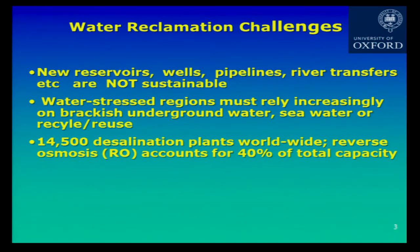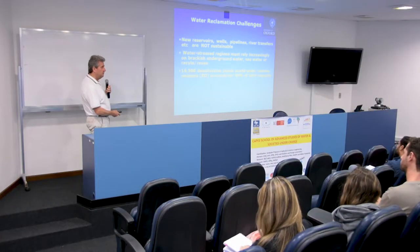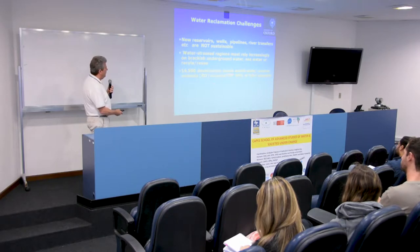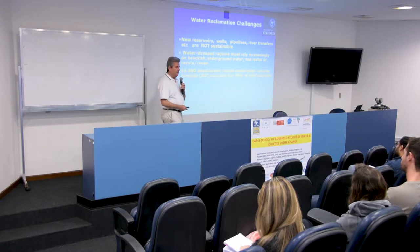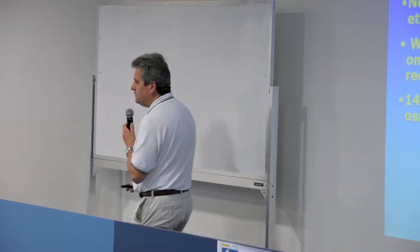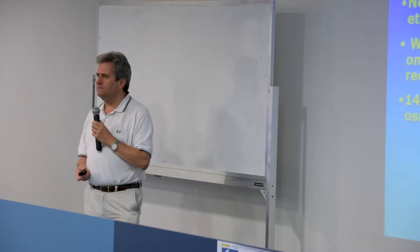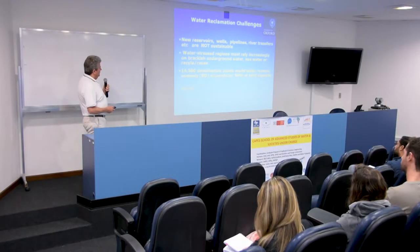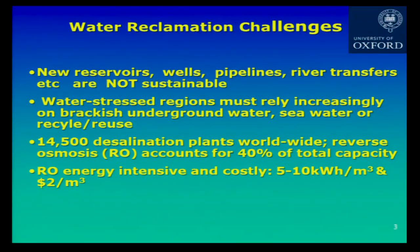Around the world, we have about 14,500 desalination plants. Of those, reverse osmosis, which is a membrane technique, accounts for 40% of total capacity. There are quite a lot of plants that run using thermal desalination, akin to distillation or evaporation, but obviously they create a lot of greenhouse gases because they use lots of energy — particularly in the Arabian Gulf region, powered using gas or oil. RO energy is very intensive and costly. On average, it costs from 5 to 10 kilowatt hours per cubic meter, which works out to about $2 a cubic meter.